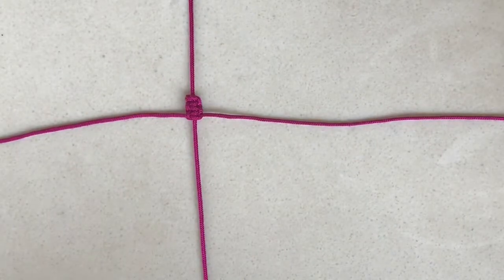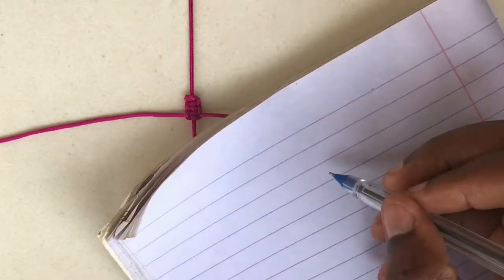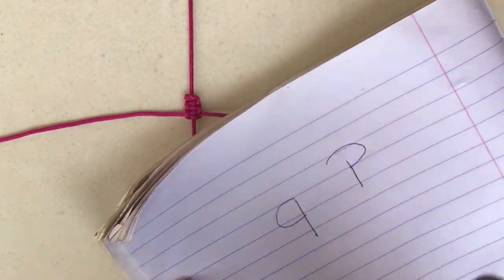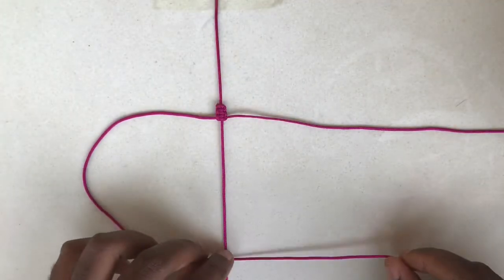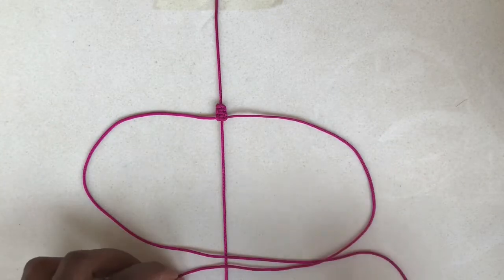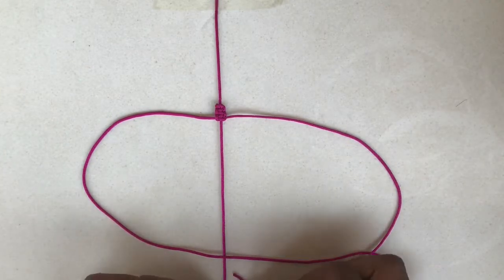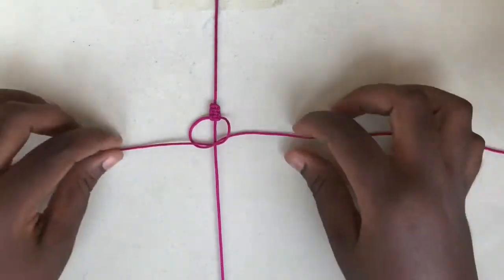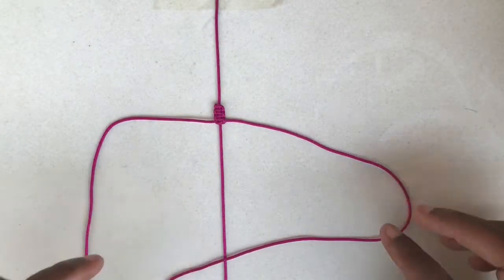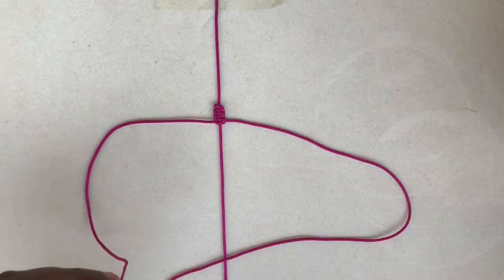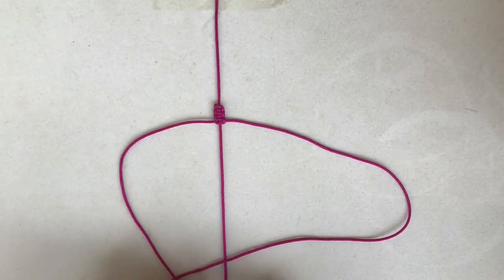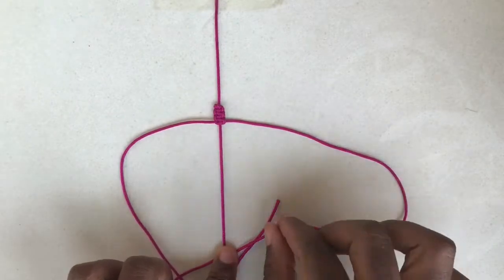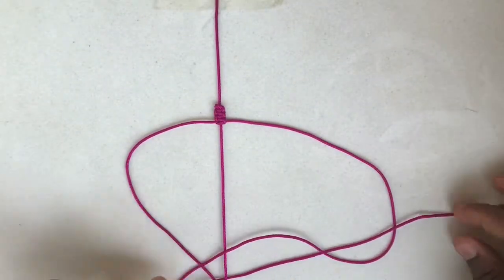To make it easy for you, remember we need P for the right and Q for the left. So you form the Q and then P, and then pass it under the middle cord and pull it out of the loop that has been formed on the left side. Now you form the P for the right side and then Q for the left side, and pass it under the middle one and pull it out of the loop that has been formed on the right side, which is the P. Pull both sides to form the knot.